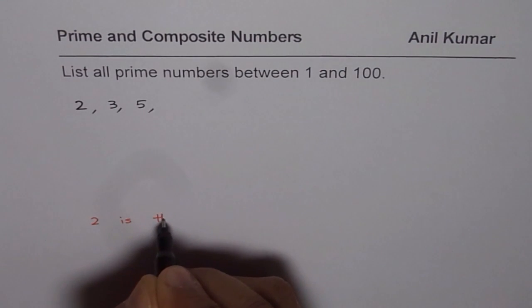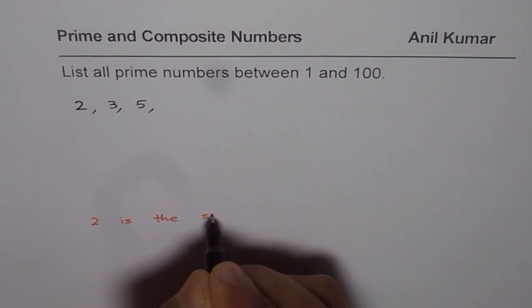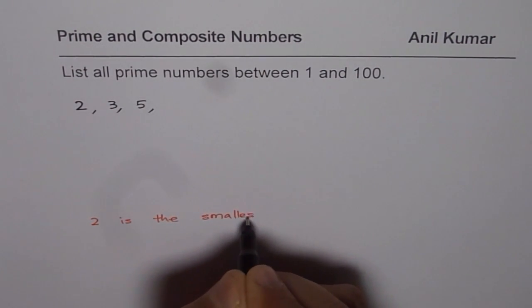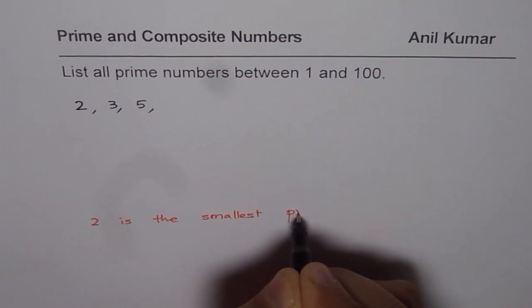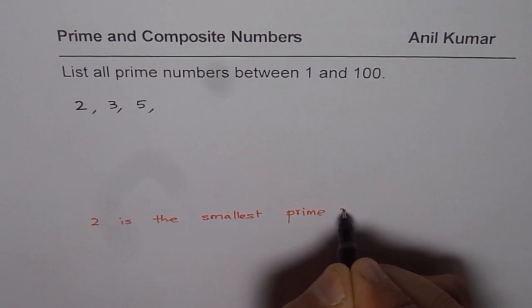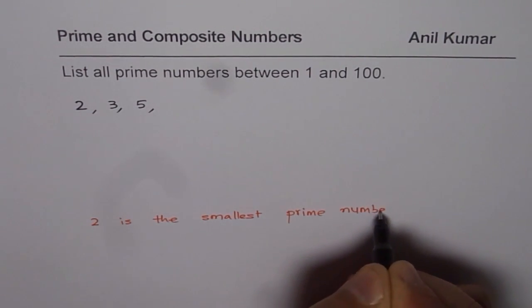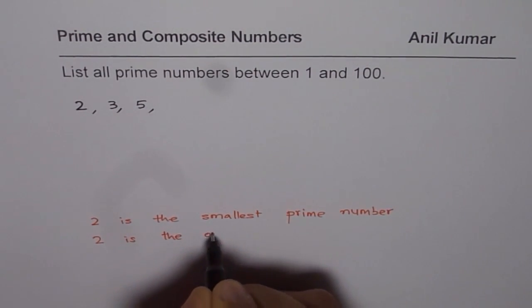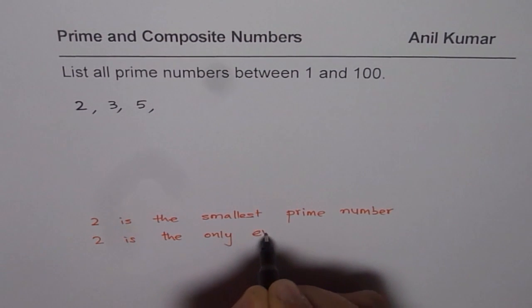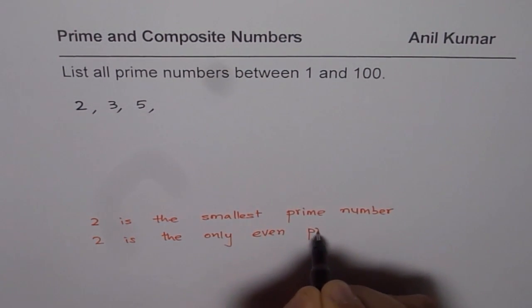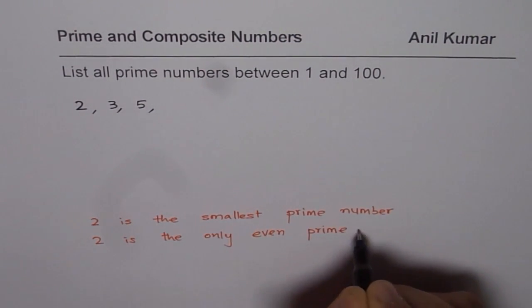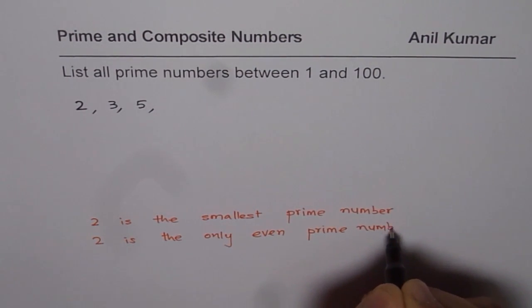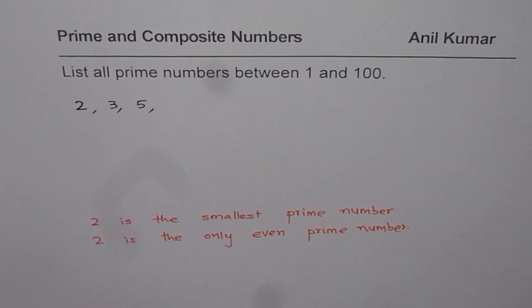And we also learn that 2 is the only even prime number. You get the idea. So 2 is very important - it is the smallest and the only even prime number. Let's continue with our list.